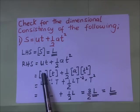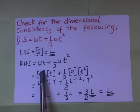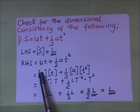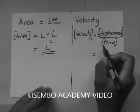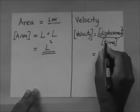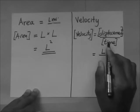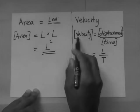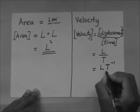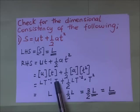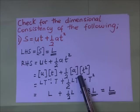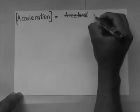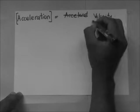From here, u is velocity, and the dimensions of velocity are LT to the power negative 1. We get this by taking displacement, which is L, and dividing by time T. So the dimensions of velocity are LT⁻¹. Multiplying by time T gives LT⁻¹ × T. For acceleration, it is velocity over time by definition, so the dimensions of acceleration are LT⁻².